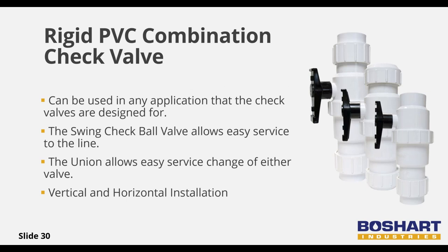Like the PVC check valves, combination swing check ball valves offer the same features but are equipped with a ball valve and a union. Some wastewater pumping applications require a check valve, an inline ball valve, and a union, so this is a perfect solution. It allows easy service to the line by turning off flow directly after the check valve, and the union makes it easy to service either side. These can be installed vertically and horizontally as long as the correct orientation is used.